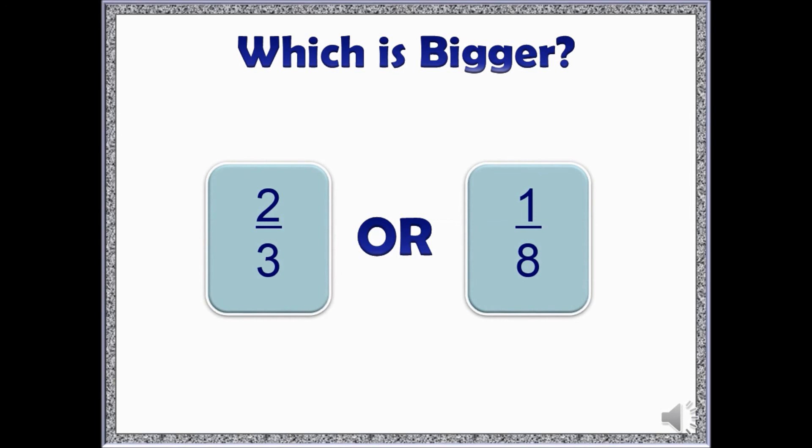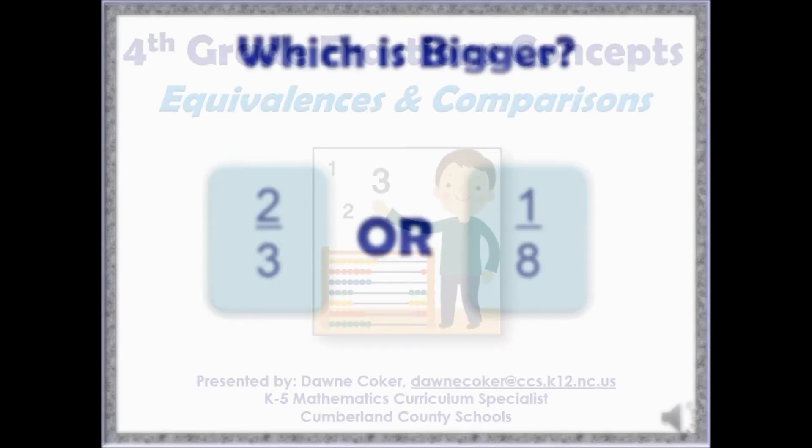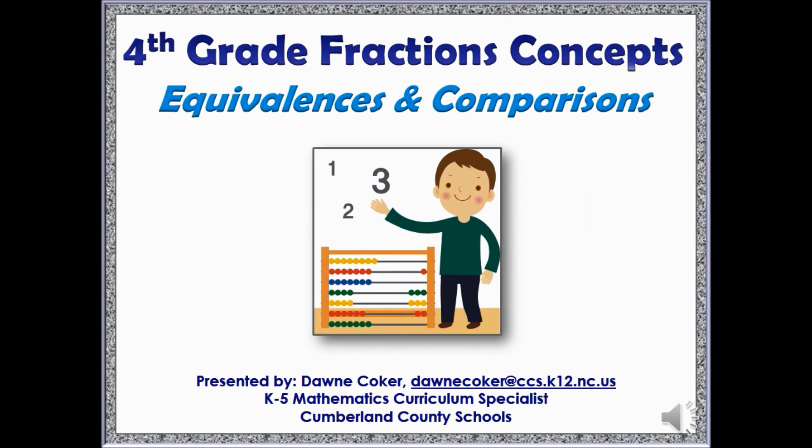When neither the numerator nor the denominators are the same, students need to rely on one of three strategies, either building a model of each, using benchmark numbers, or creating equivalent fractions. Here, I know that one of these fractions is larger than one-half, and the other fraction is smaller than one-half, so I can use benchmark numbers to make the comparison. I hope you enjoyed today's video. Have a great day!